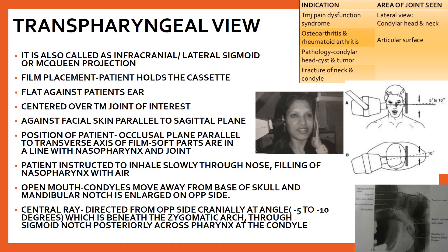The transpharyngeal view is also known as the infracranial lateral sigmoid or Maquin's projection. Its indications include TMJ pain dysfunction syndrome, osteoarthritis, rheumatoid arthritis, pathologies of the condylar head such as cysts and tumors, and TMJ fractures. Film placement is similar to the transcranial view — held by the patient against the ear and centered over the TMJ of interest. The major difference is in how the x-ray tube head is projected.